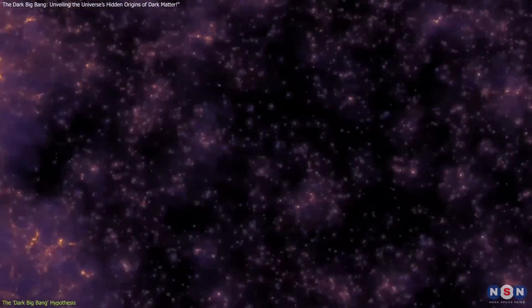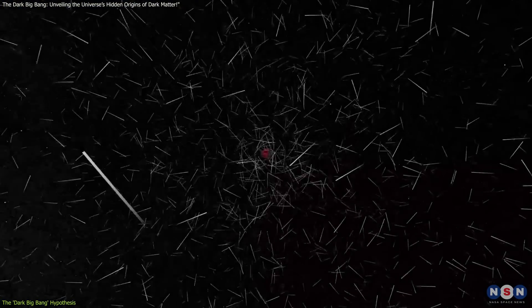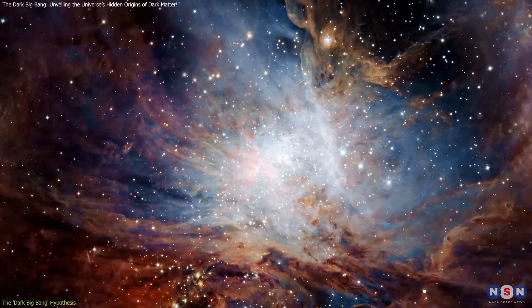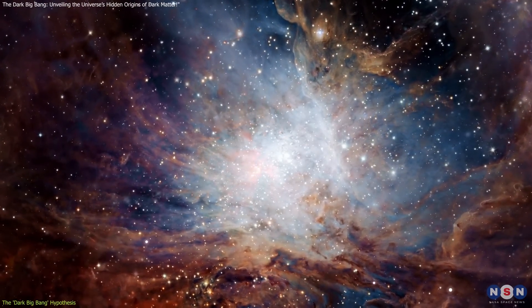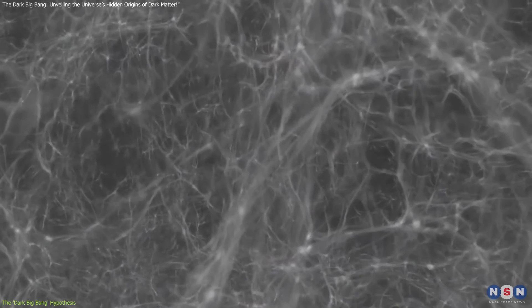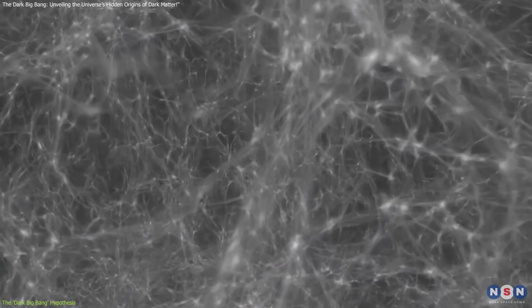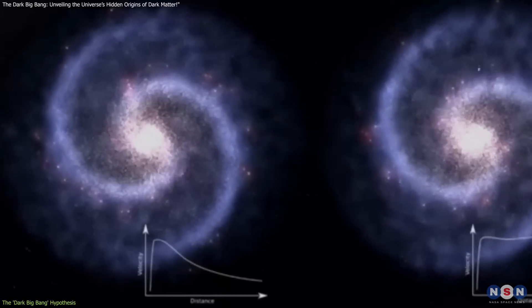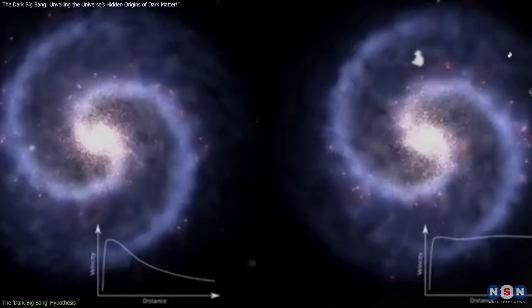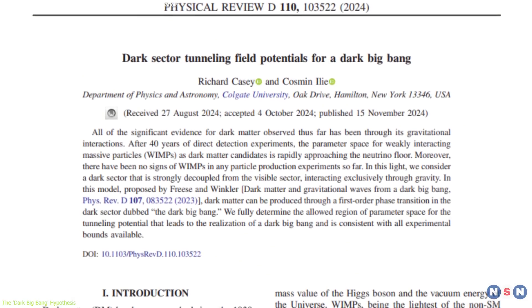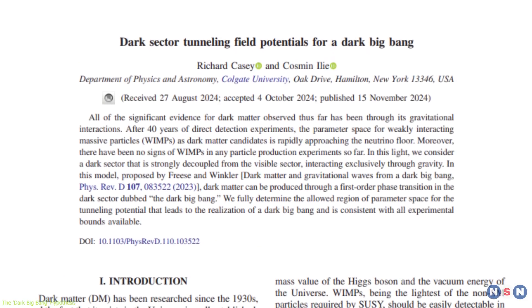The dark sector might host new particles, such as dark photons or sterile neutrinos, which could clarify phenomena like unexpected stellar motions or intergalactic gas temperatures. Additionally, self-interacting dark matter could resolve long-standing puzzles like the cusp core problem, addressing discrepancies in predicted and observed dark matter densities at galaxy centers.